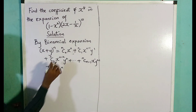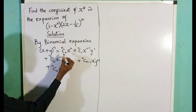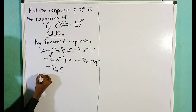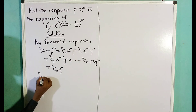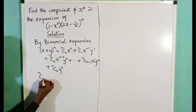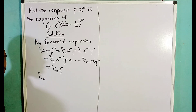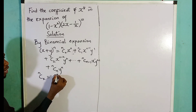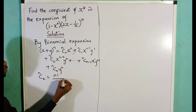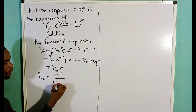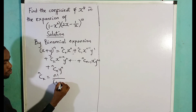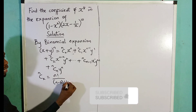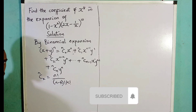Please note that n combination k is given by n factorial over (n minus k) factorial times k factorial.